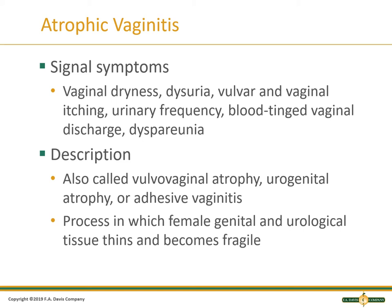Symptoms include vaginal dryness, dysuria, vulvar and vaginal itching, urinary frequency, vaginal discharge, and dyspareunia, which is painful sex. We look at these with the vaginitis, and we understand that female genitals can be very inflamed, very tender. The tissue thins and becomes fragile as they get older, and this contributes to atrophic vaginitis.